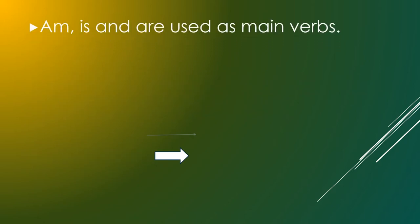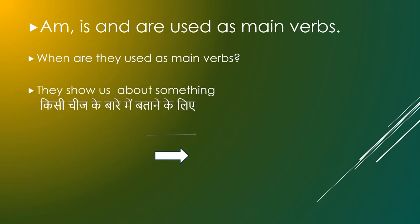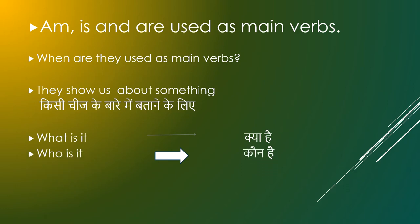Am, is and are used as main verbs. When are they used as main verbs? When they show us about something — what is it? Who is it? How is it?